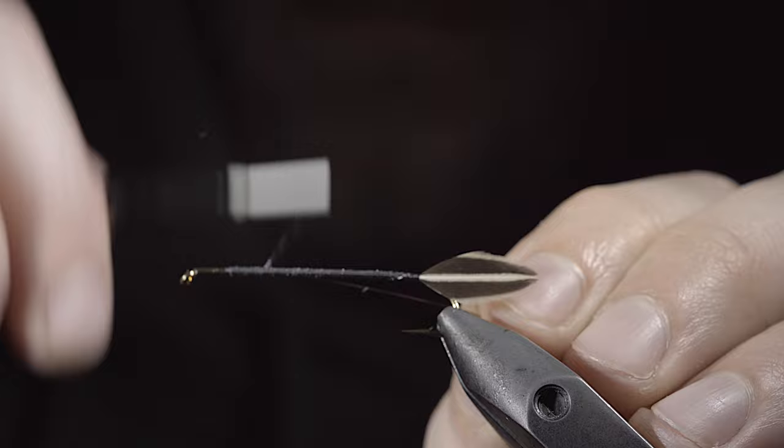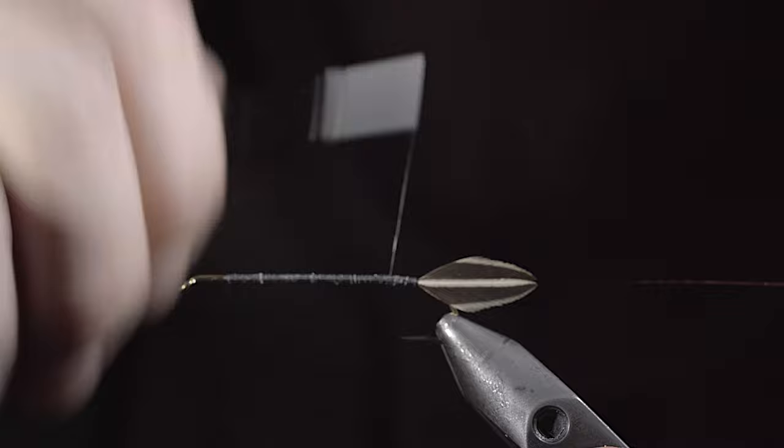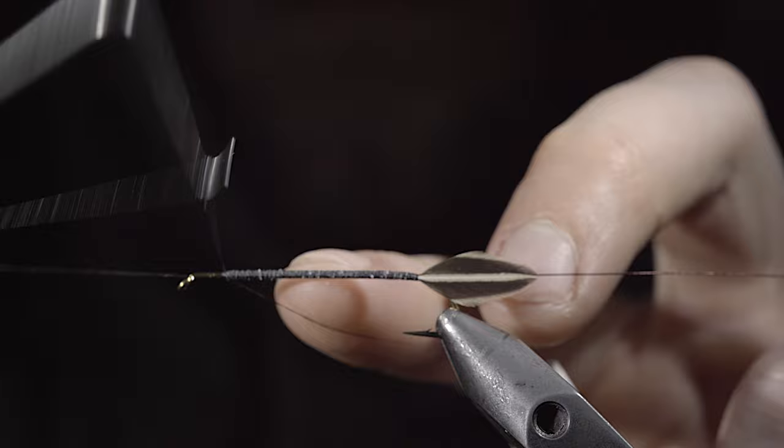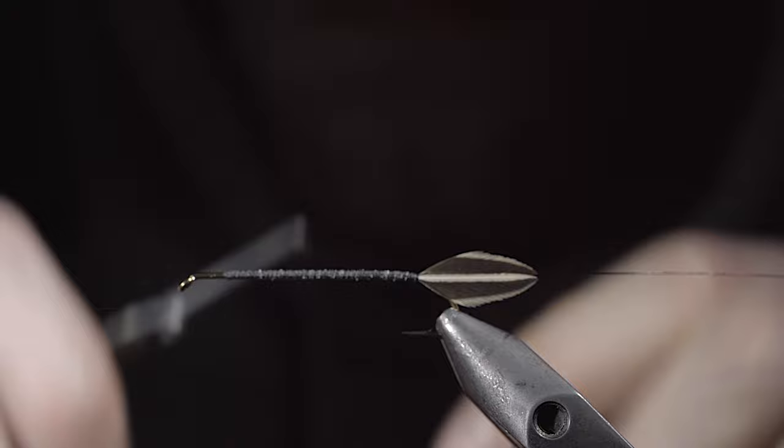Set your wire off to the side, reverse your thread's direction wrapping back to the head of the fly. Here we'll put in a couple turn whip finish and snip our thread free. We'll then grab some brown rayon thread and secure it to the back of the fly.